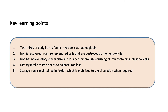The dietary intake of iron needs to balance the iron loss that occurs through sloughing of intestinal cells and through menstrual loss. Storage iron is maintained in ferritin, which is mobilized to the circulation when required. Thank you for watching this video.